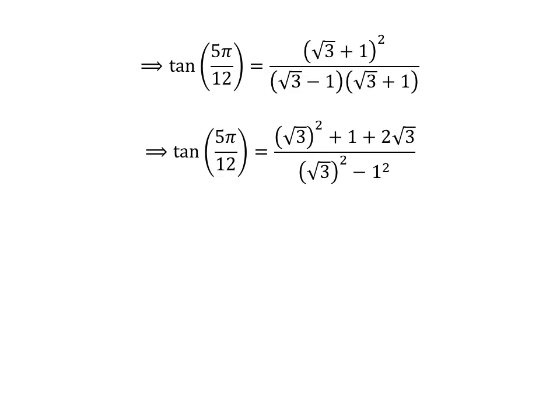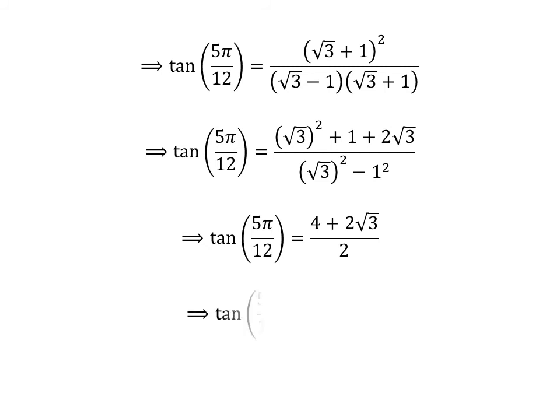Here, the denominator is expanded in the form of a minus b times a plus b, which is equal to a squared minus b squared. We know square root of 3 squared is 3, so replacing accordingly and further simplification gives us tangent of 5 times pi upon 12 is equal to 4 plus 2 times square root of 3 upon 2. Since 2 is the common factor in the numerator, taking it out and cancelling it with the denominator gives us tangent of 5 times pi upon 12 is equal to 2 plus square root of 3.